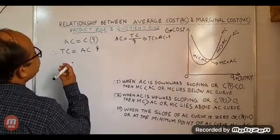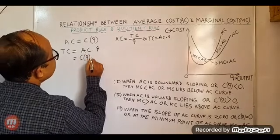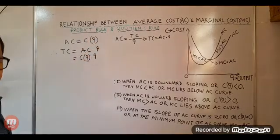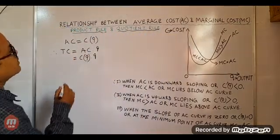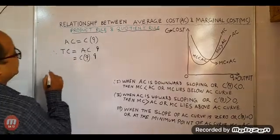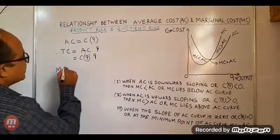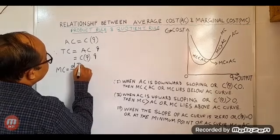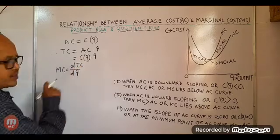Here, C(Q) is the average cost as a function of Q. Now we calculate marginal cost from this function. Therefore, marginal cost is the derivative value of TC with respect to output. It is the additional cost for an additional unit of output — that is, dTC/dQ.